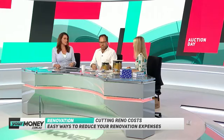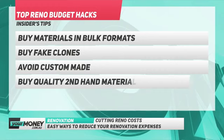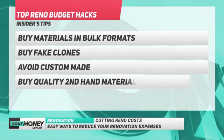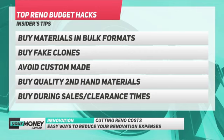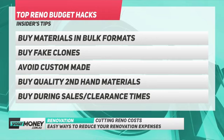Top five tips for keeping your budget low on a renovation. Definitely buy in bulk formats as we've shown today. Look for fake clones — you know how you can go to Canal Street in New York and buy a fake Louis Vuitton or Chanel bag? You can do exactly the same thing for your fixtures and fittings. A lot of cheaper companies rip off the looks of more expensive and nicer-looking designs, and you can pick them up for a slither of the price. Avoid custom make — when you're renovating for profit, try to avoid anything custom made because it's typically more expensive than off the shelf.